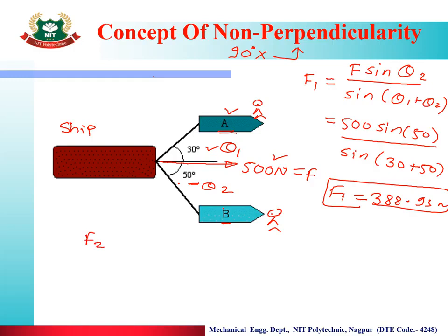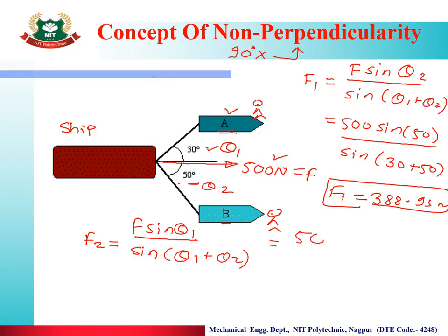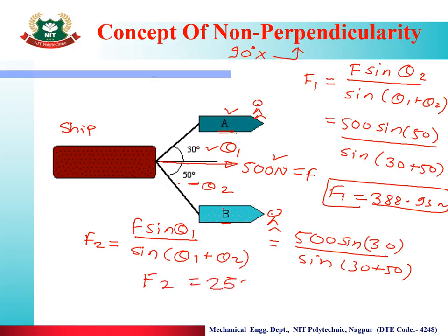To find F2, that is the force on person B, the formula is: F2 = F × sin(θ1) / sin(θ1 + θ2). So F2 = 500 × sin(30°) / sin(30° + 50°) = 253.85 Newton. So person B needs 253.85 Newton of force to pull the ship.